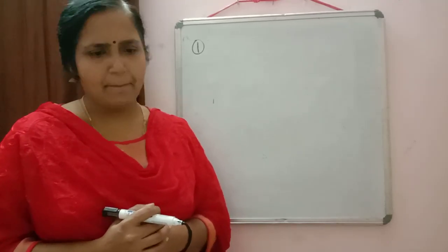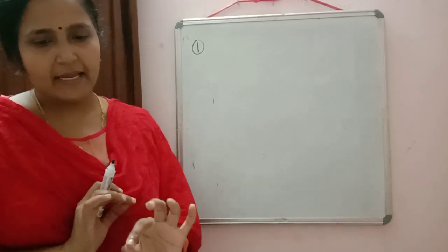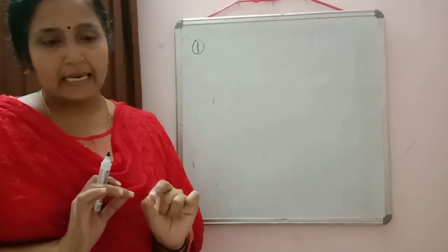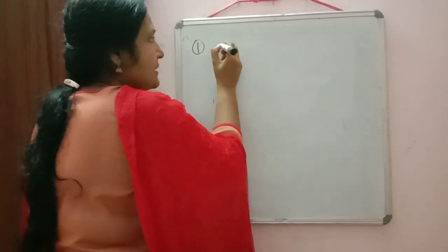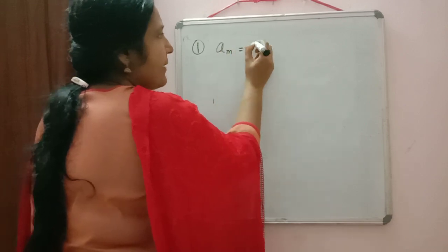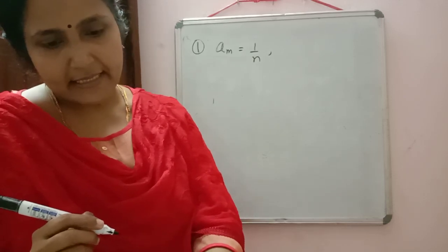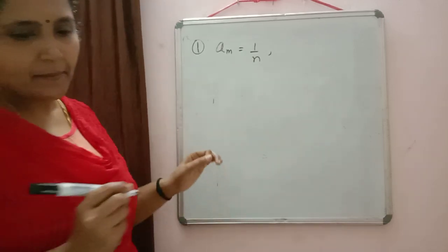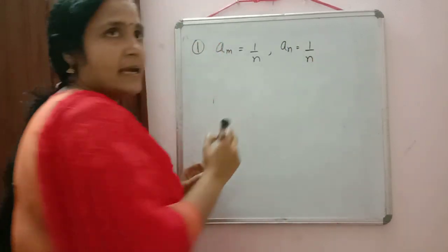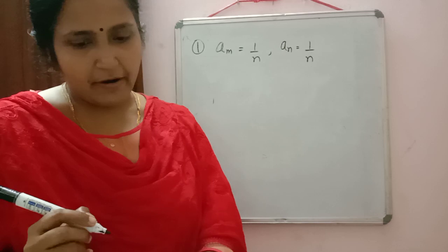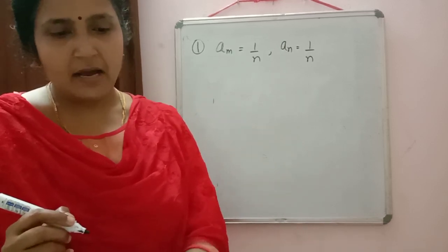We will do some more questions related to AP only. The first question is: if the mth term of an AP is 1/n, and the nth term is 1/m, then we have to prove the sum of mn terms is equal to half into (mn plus 1). The mth term is denoted as AM, so AM equals 1/n and AN equals 1/m.